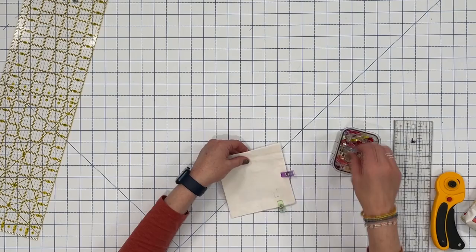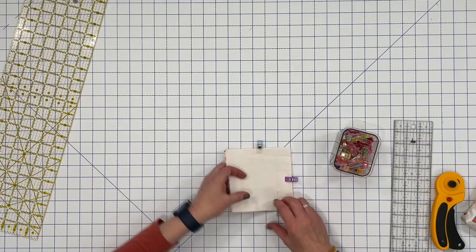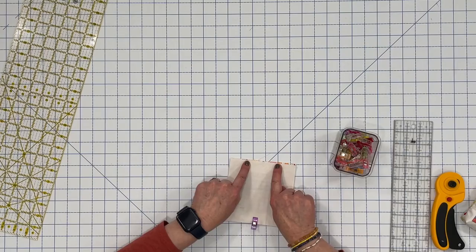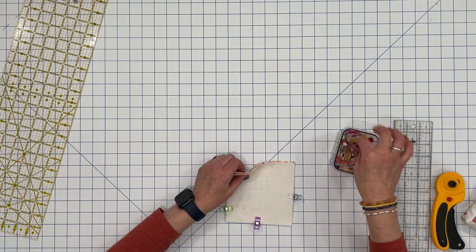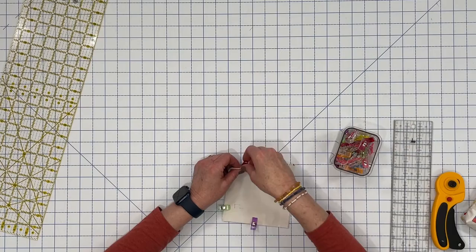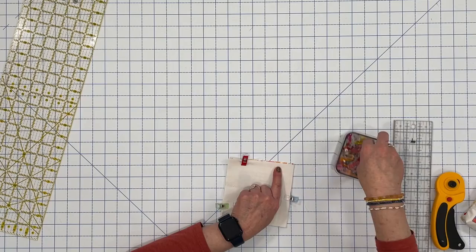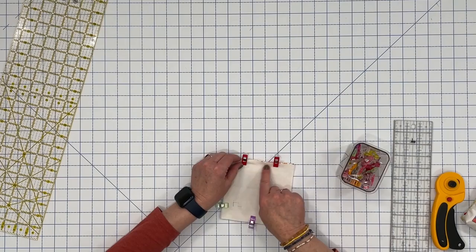Leave the print facing up and take the other two squares and place it right side facing down. Line up your edges as best you can and clip them in. To leave a place to stuff it, we're going to leave about a two inch section open on one side so that way we can stuff it. For me, I like to use two red clips or you can use pins, whatever that reminds me that I don't want to sew past those red clips.